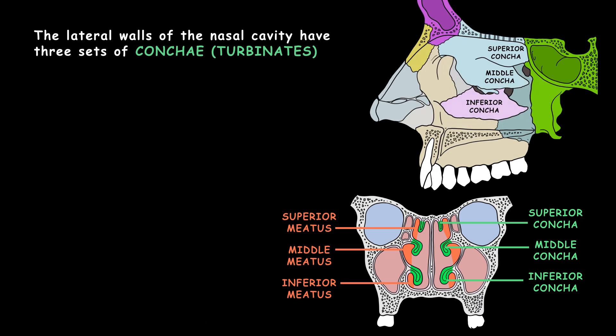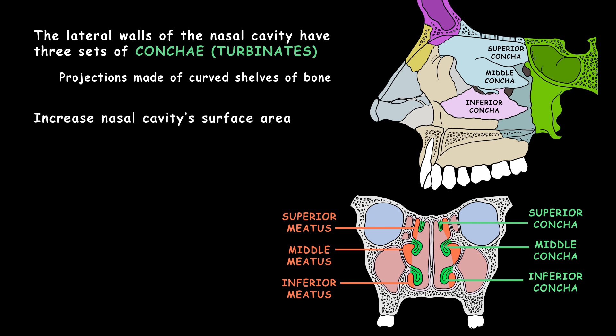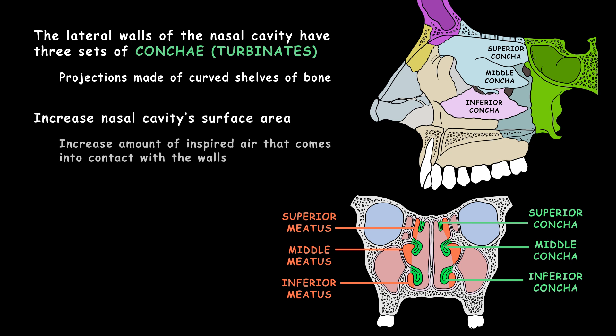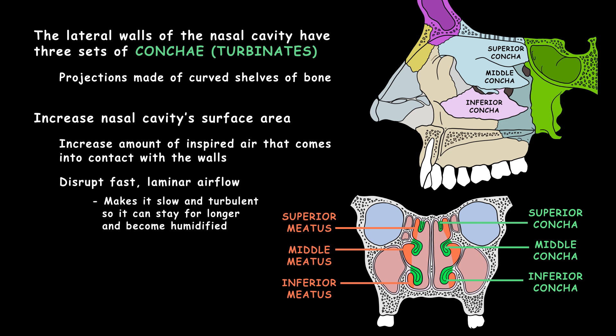The lateral walls of the nasal cavity have three sets of conchae, or turbinates, projections made of curved shelves of bone. The conchae increase the nasal cavity's surface area, increasing the amount of inspired air that comes into contact with the walls. They also disrupt fast laminar airflow, making it slow and turbulent instead so it can stay in the nasal cavity for longer and become humidified.